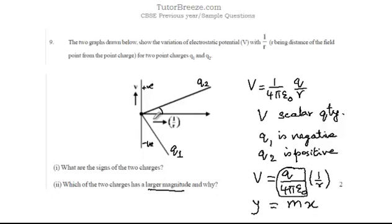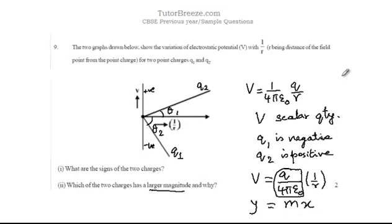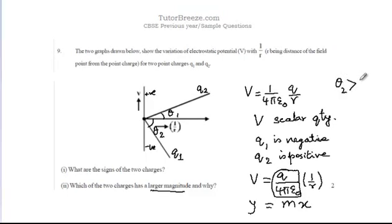Comparing the two slopes, you can see that this angle theta 1 and this angle theta 2, then theta 2 is greater than theta 1. Since theta 2 is more than theta 1, the slope is more for q1 than for q2. This means that q1 has a larger magnitude than q2, since the slope is more for q1 than for q2.